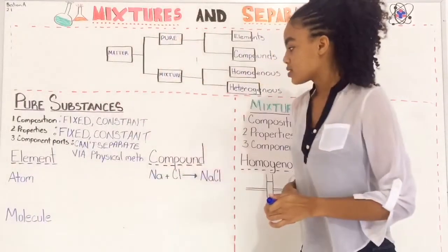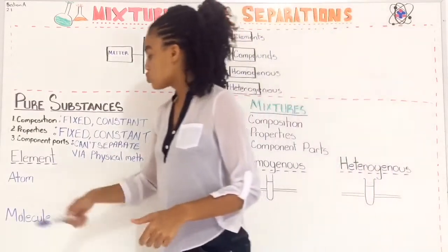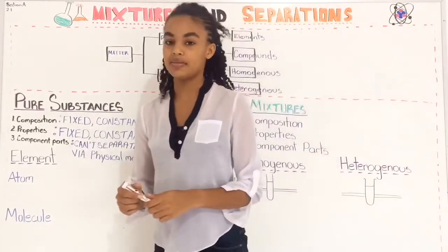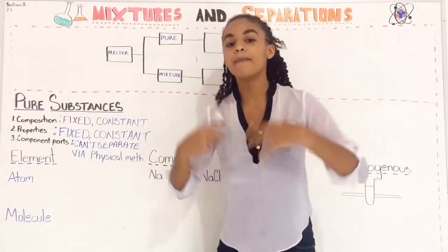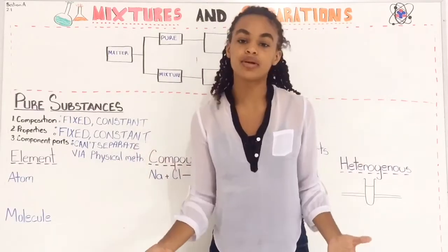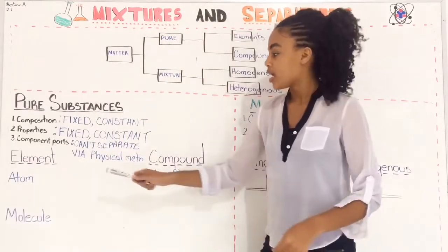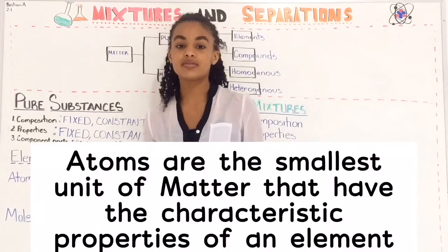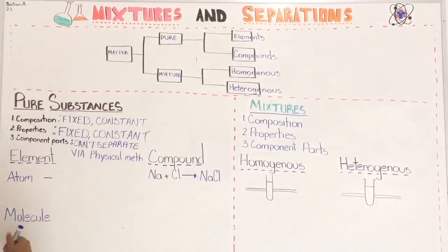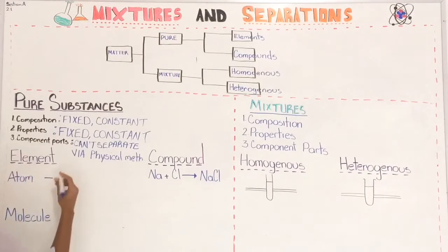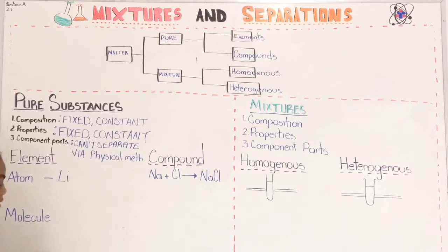The two types of pure substances are elements and compounds. An element is the purest kind of substance there is — it's the simplest form. You can't break down an element into anything simpler. So we say an element is the simplest form of a substance. Atoms make up elements; they're the smallest parts of the element. For example, lithium is an element, and it is made up of lithium atoms.